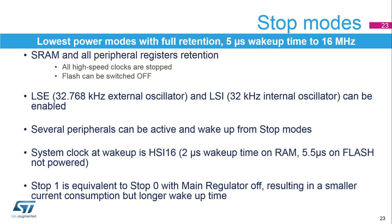STM32G0 devices feature two stop modes, stop 0 and stop 1, which are the lowest power modes with full retention and only a 2 microsecond wake-up time to run mode at 16 MHz. The contents of SRAM and all peripheral registers are preserved in stop modes. All high-speed clocks are stopped. The 32.768 kHz external oscillator and 32 kHz internal oscillator can be enabled. Several peripherals can be active and wake up from stop mode. System clock on wake-up is the internal high-speed oscillator at 16 MHz, with only a 2 microsecond wake-up time from RAM or 5 microseconds from flash.